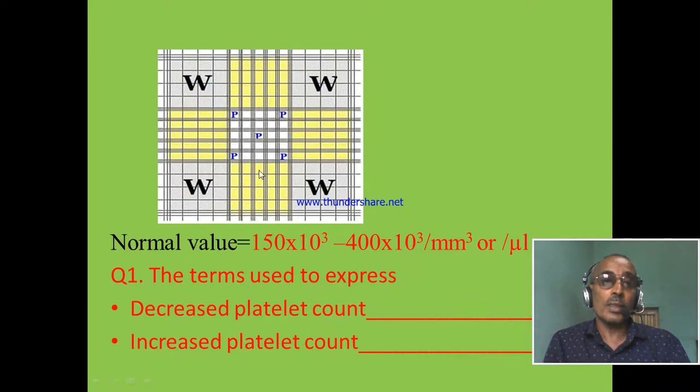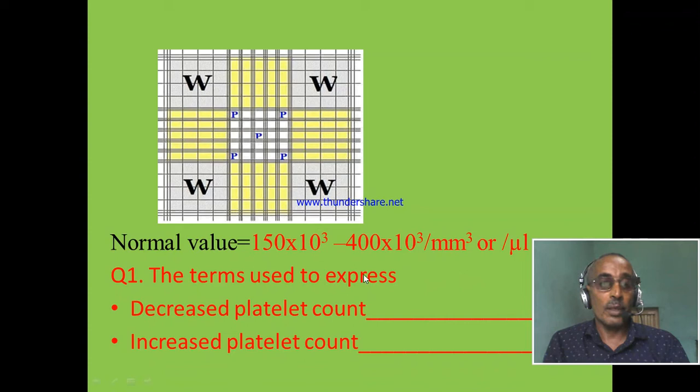Normal value: The normal value for platelet count is 150,000 to 400,000 platelets per cubic millimeter or microliter of blood. Summary question: What do you call the condition when the platelet count is below the normal range or above the normal range? This is a very easy question.